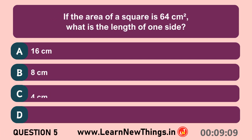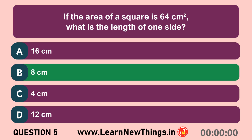If the area of a square is 64 cm², what is the length of one side? 8 cm.